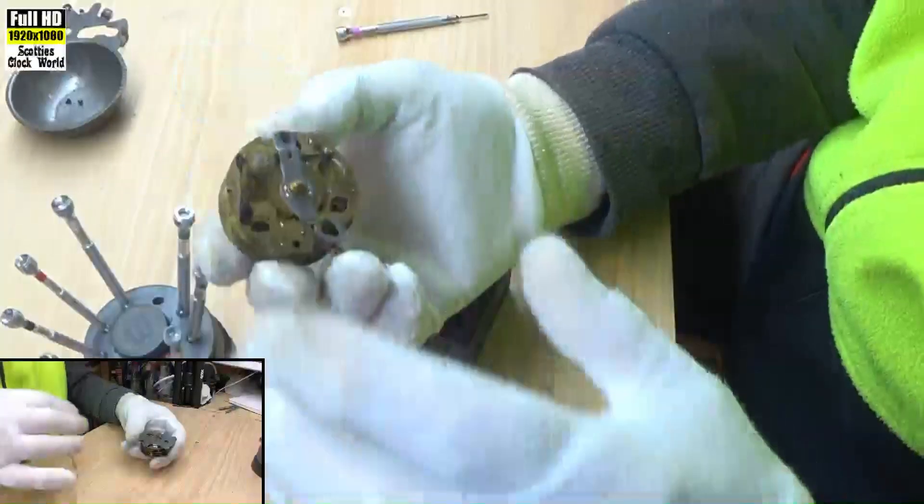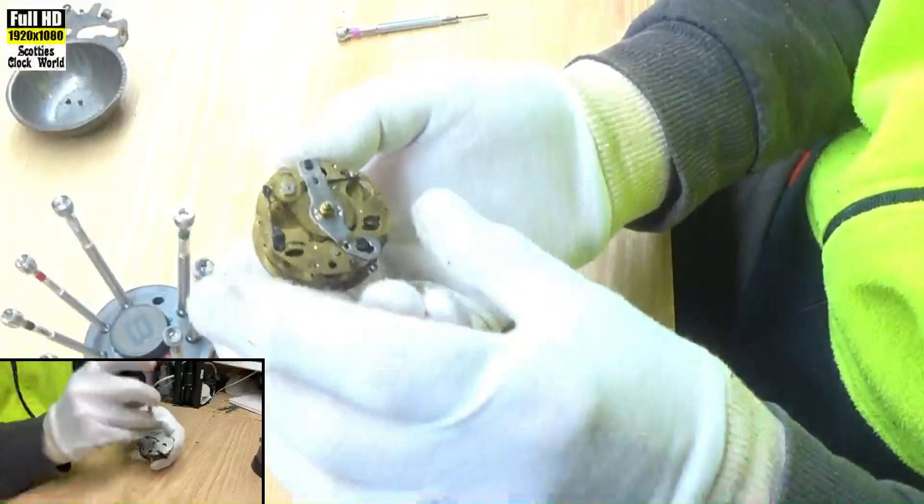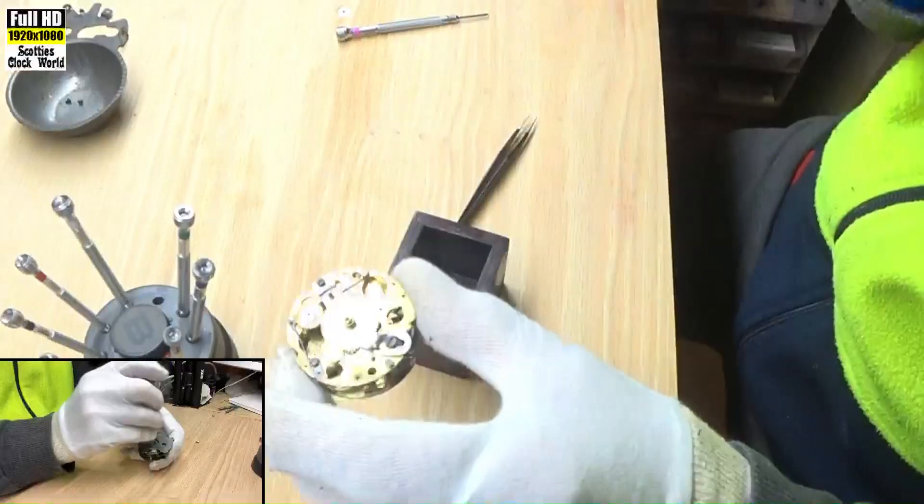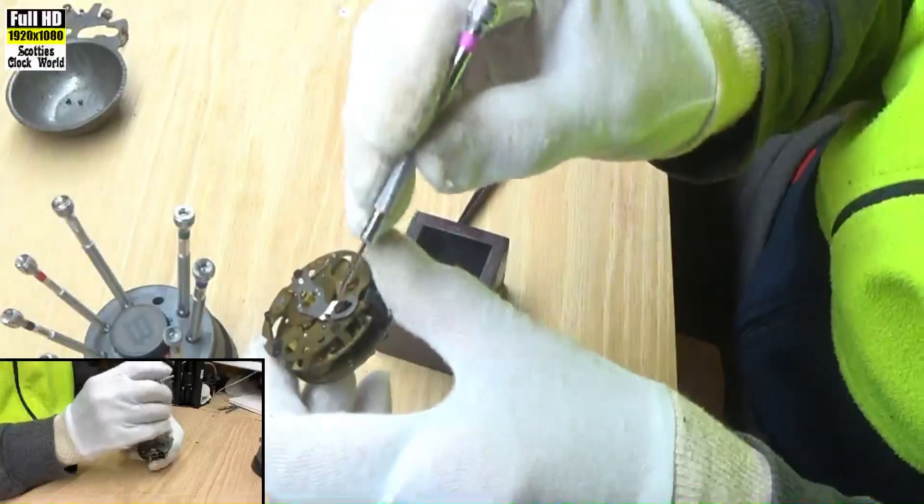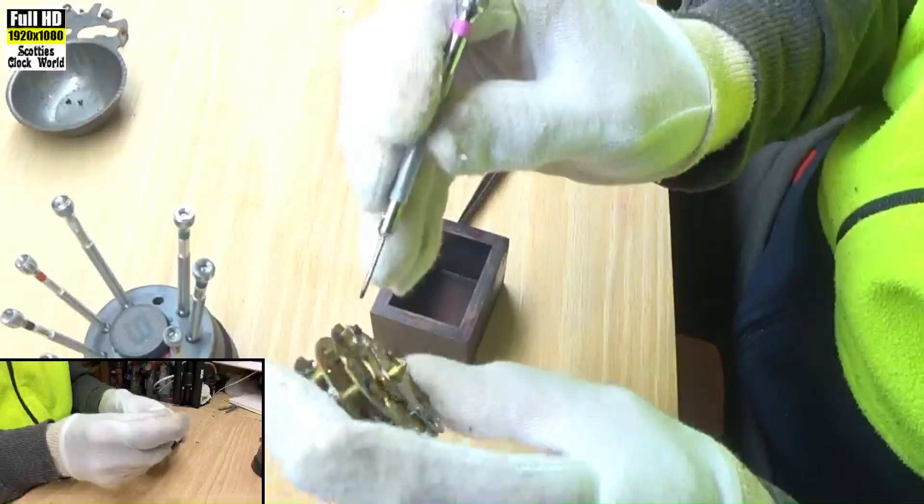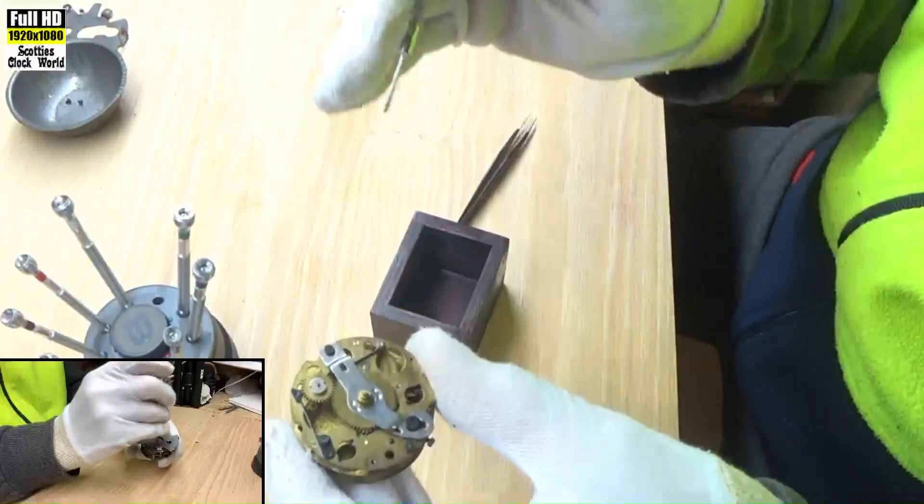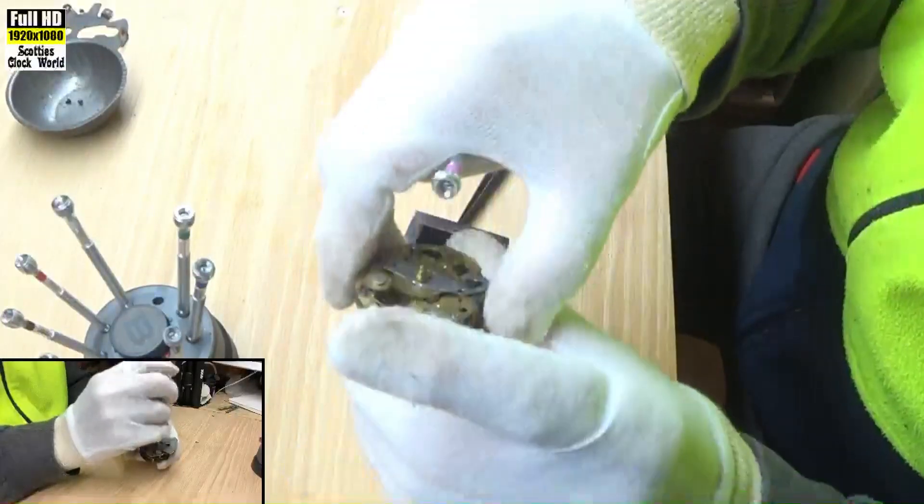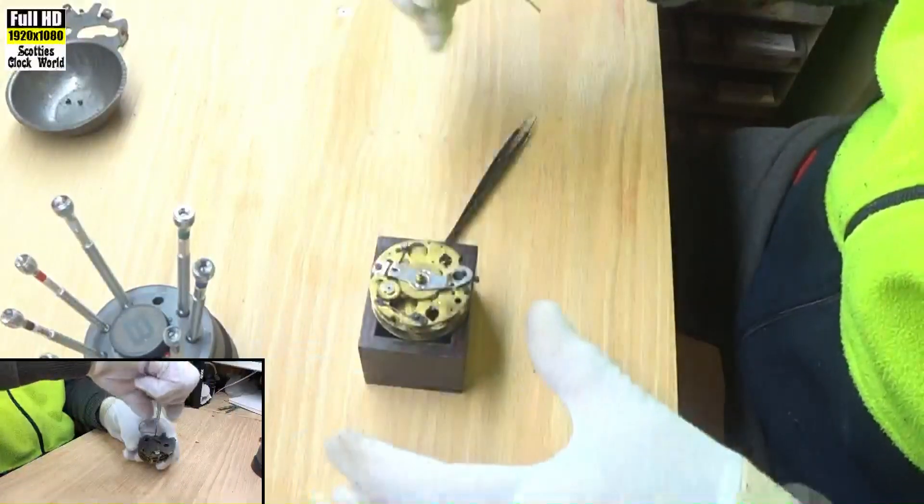Back of the movement, that's the front of the movement. Now we've got a screw there, a screw there, and a screw there that hold that top plate on, so we'll remove those first.